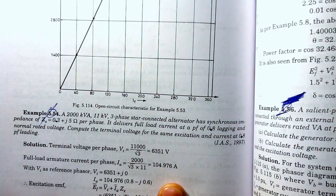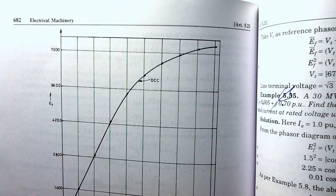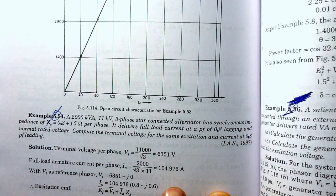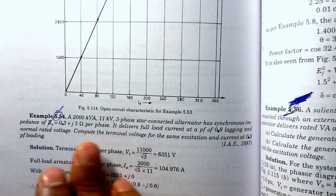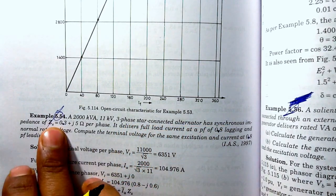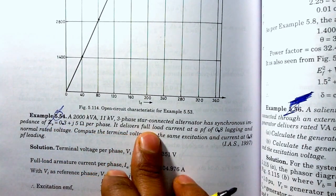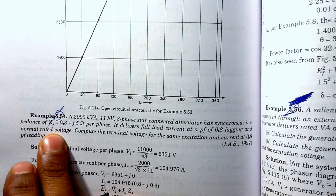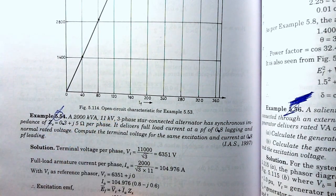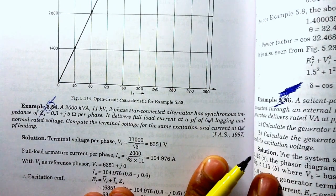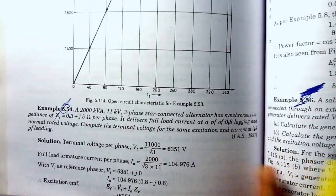This is example number 5.54 given on page number 682 from the book 'Electrical Machinery' written by Dr. P.S. Bimbra. We have to solve this question. It is given that a three-phase star-connected alternator has a synchronous impedance of a given value, and it delivers full load current at a power factor of 0.8 lagging at a normal rated voltage of 11 kilovolts. We have to calculate the terminal voltage for the same excitation and current at 0.8 power factor leading.